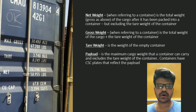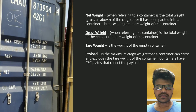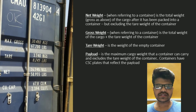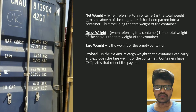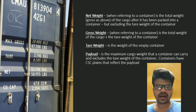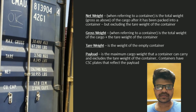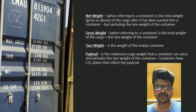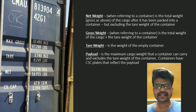Now we go to the next topic — it is net weight. As you can see, the net weight is 26,740 kgs. When referring to a shipping container, the net weight is the total weight of the cargo — that is cargo weight plus its packaging weight plus its pallet weight — after it has been packed into a container, but excluding the tare weight of the container.